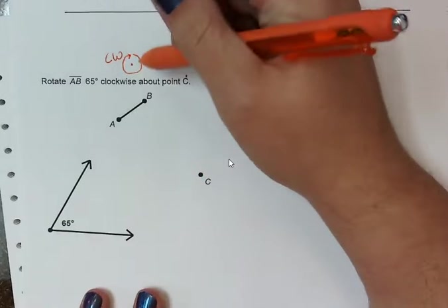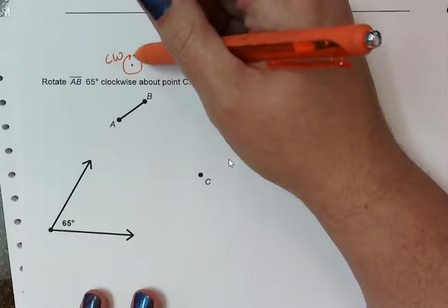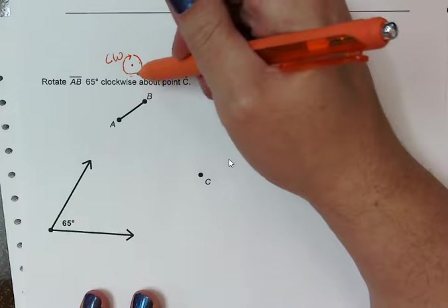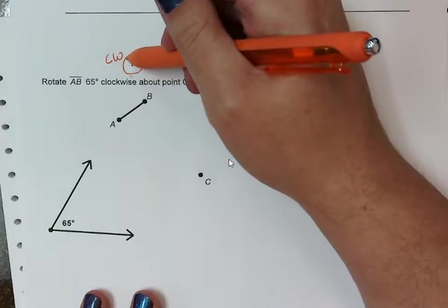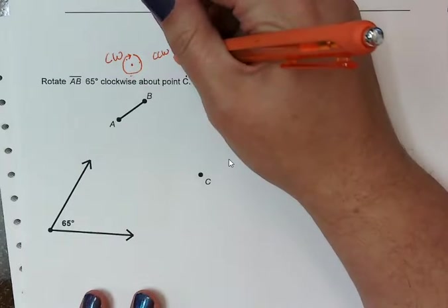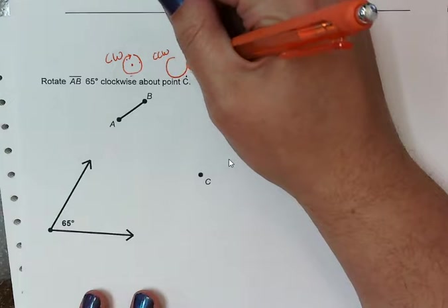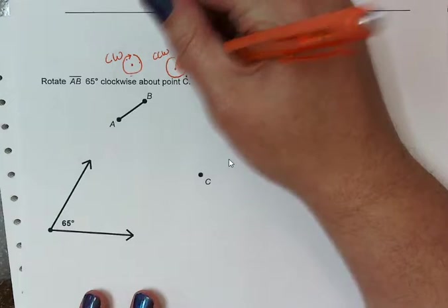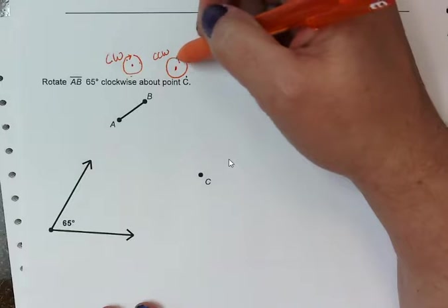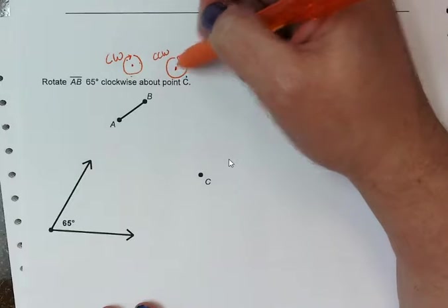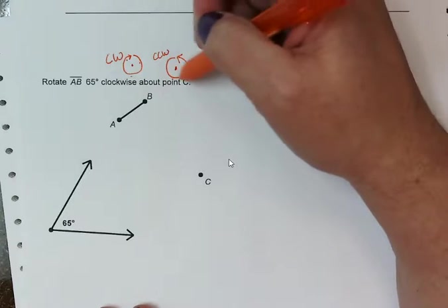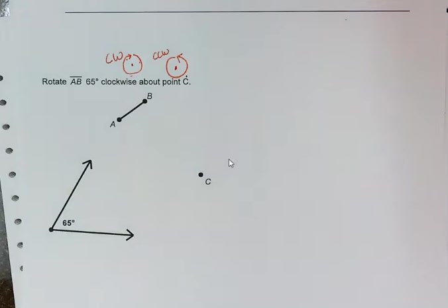If we are above it, that means we are going to the right. But if our shape that we're rotating is below the point, that means it's going to look like we're going to the left. And then counterclockwise goes the opposite direction of the hands on a clock. If you are below the center, it really ends up looking like you're going right, but you're still going in that same counterclockwise direction.